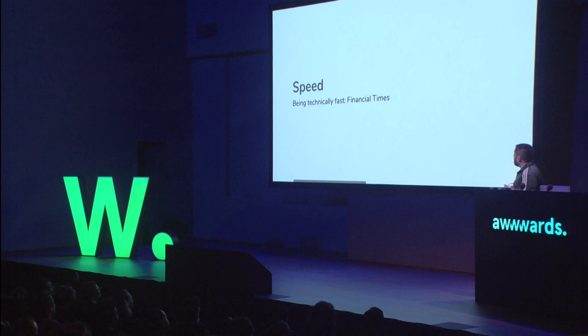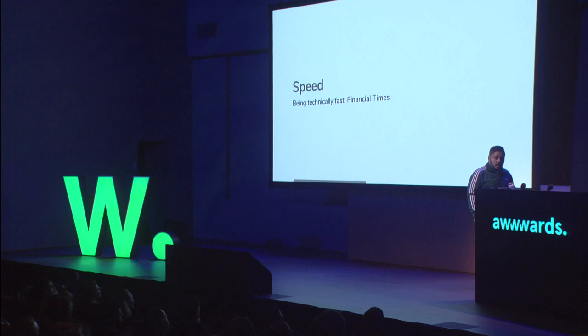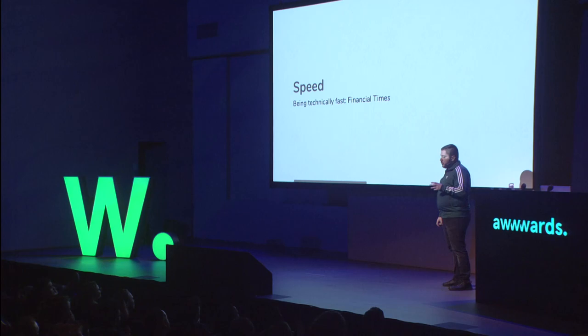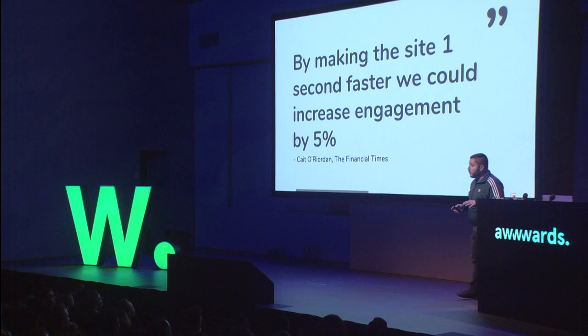Speed is broken down into two things: the real and the perceived. So now I'm going to talk about technical speed. A story of the Financial Times — they have a very expensive subscription model and a very low budget. They came up with a clever algorithm called the tipping point: when a user reads five articles a month, they're more likely to subscribe; push them to nine and they'll definitely subscribe. Simply by making the site one second faster, they increased engagement for everybody.